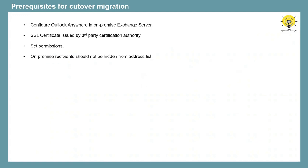You need to make sure the mailboxes that you want to migrate to Office 365 are not hidden from address list. If any mailbox is hidden from address list, cutover migration will skip that mailbox. If you have Azure AD Connect deployed on-premise, you need to disable it before you start cutover migration. If you have already synchronized on-premise identities to Office 365 using Azure AD Connect, you need to purge them, because during cutover migration these identities will be provisioned automatically in Office 365. Cutover migration will either provision duplicate accounts or the migration process will fail, so you must disable Azure AD Connect before initiating cutover migration.